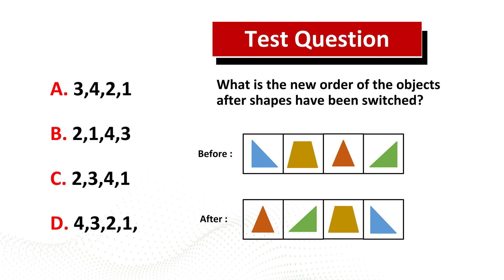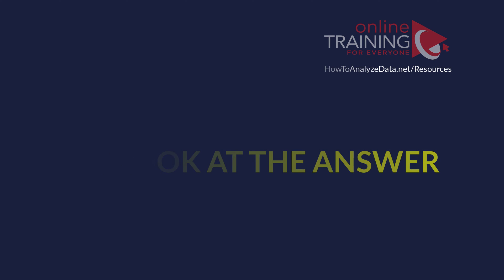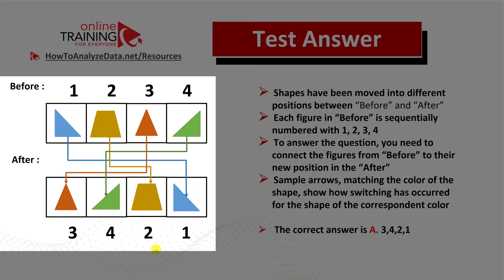Now might be a good time to pause this video to see if you can come up with the solution on your own. Let's continue to see how we can solve this challenge together. To determine new positions of the objects, you need to mentally move them from their original position to the new position. For example, let's trace the blue triangle, which moves from position one to position four, which means that in the after answer, block four for the new object would be one.